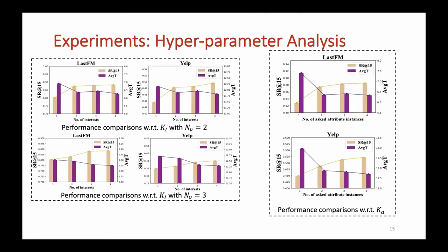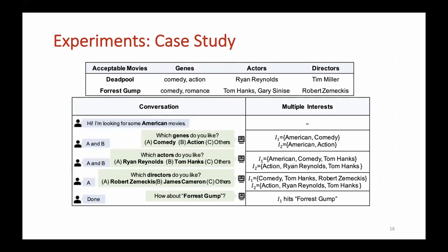We conduct some experiments to explore the hyperparameters: interest number Ka and ask attribute instances number Kp. Since interest number Ka is closely related to maximum number NV of acceptable items, we explore the hyperparameters in the case of the maximum number of acceptable items is 2 and 3 respectively, as shown in the left figures. Besides, as shown in the right figures, the attribute instances number Kp included in a question also affects the system performance. We present a conversation case generated by our framework from MovieLens dataset.